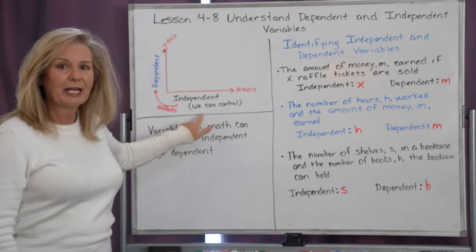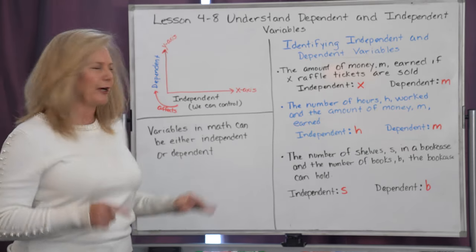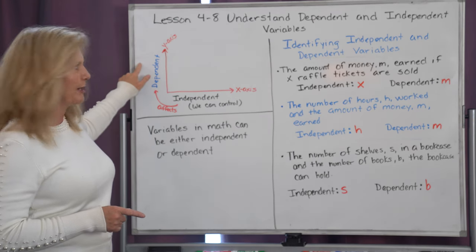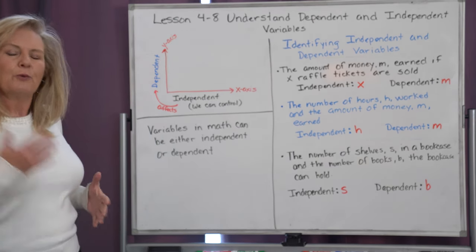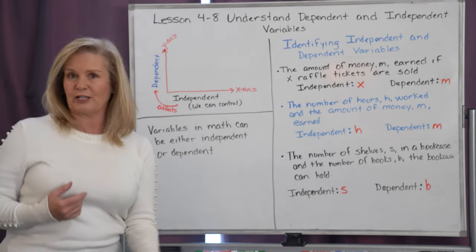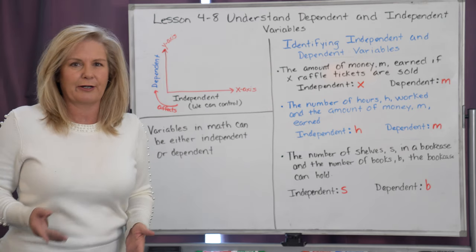The independent variable is what we can control, and that independent variable has a direct effect on the dependent variable. In math we have to be able to identify which variable is our independent variable and which variable is our dependent variable, because that's going to help us graph these variables.